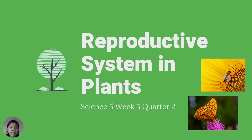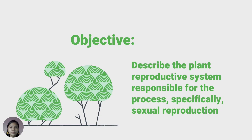Reproductive system in plants — Science 5, Week 5, Quarter 2. Like animals, plants are also capable of reproduction. They reproduce in many ways. In general, plants exhibit both sexual and asexual reproduction. New plants can be produced through seeds and different parts like stems, leaves, roots, and more. These are the reasons why you can see plants anywhere, especially in the forest where they get good physical conditions.